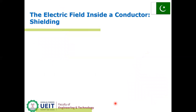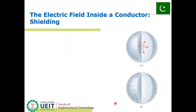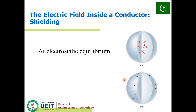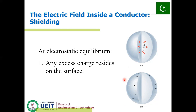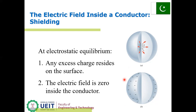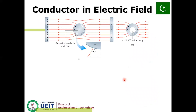The electric field inside a conductor shielding: this shows a conductor shield with cross-sections A and B. Inside figure A, negative charges are accumulated, while in figure B, the negative charges are outside the surface. At electrostatic equilibrium, any excess charge resides on the surface, and the electric field is zero inside the conductor.